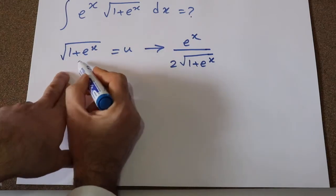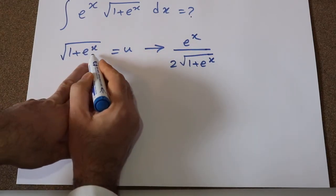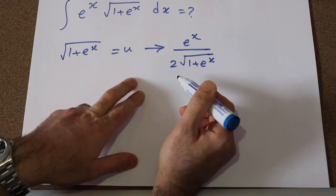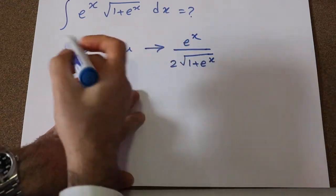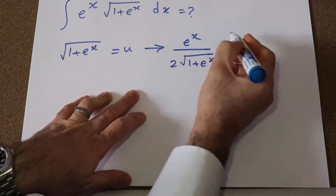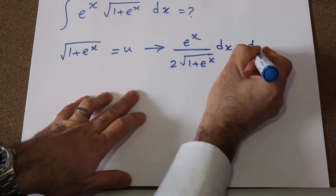If it is not clear for you how to calculate the derivative of square root of 1 plus e^x, write for me in the comment section and I will explain for you how to do that. So the derivative of this times dx will be equal to du.